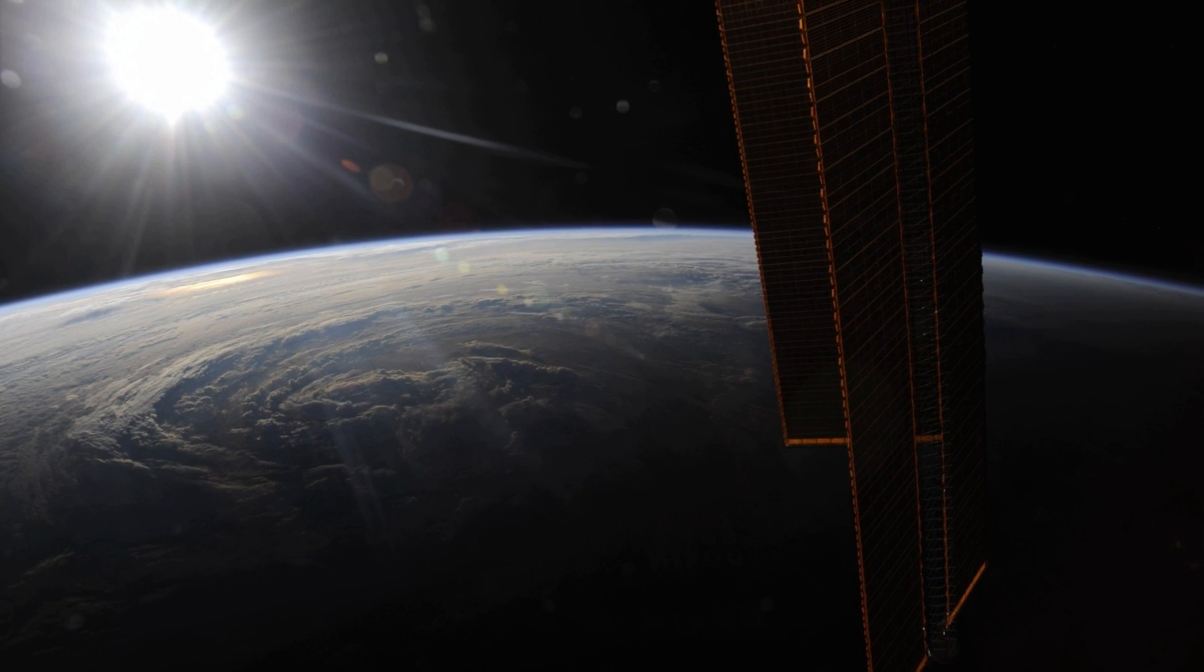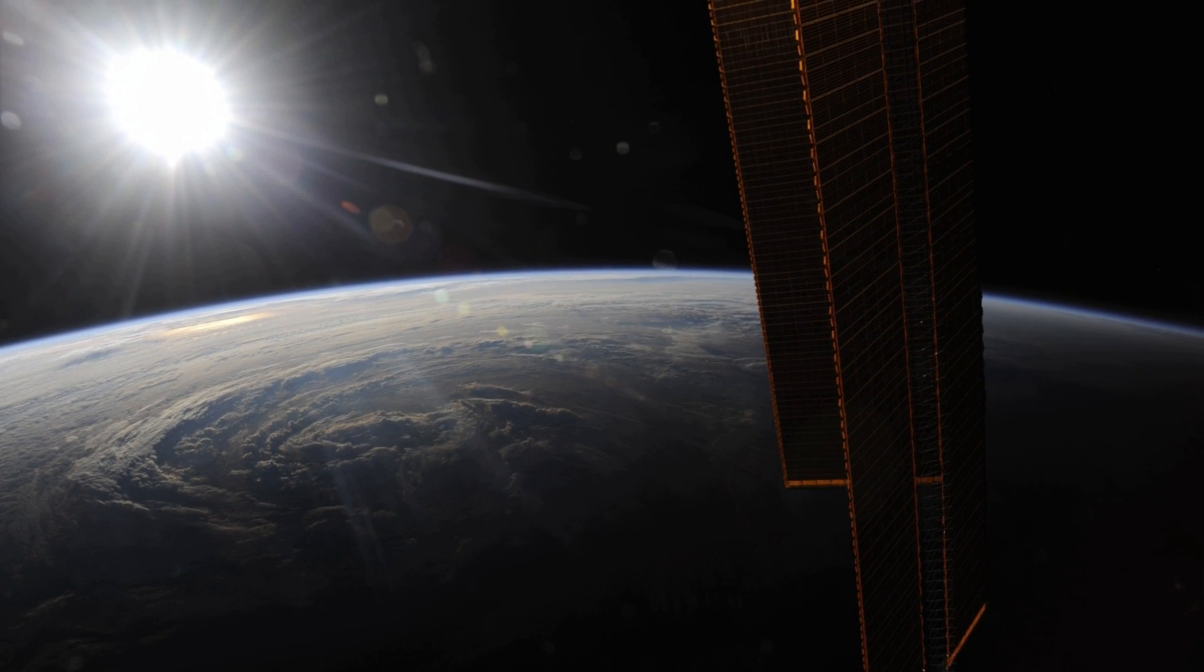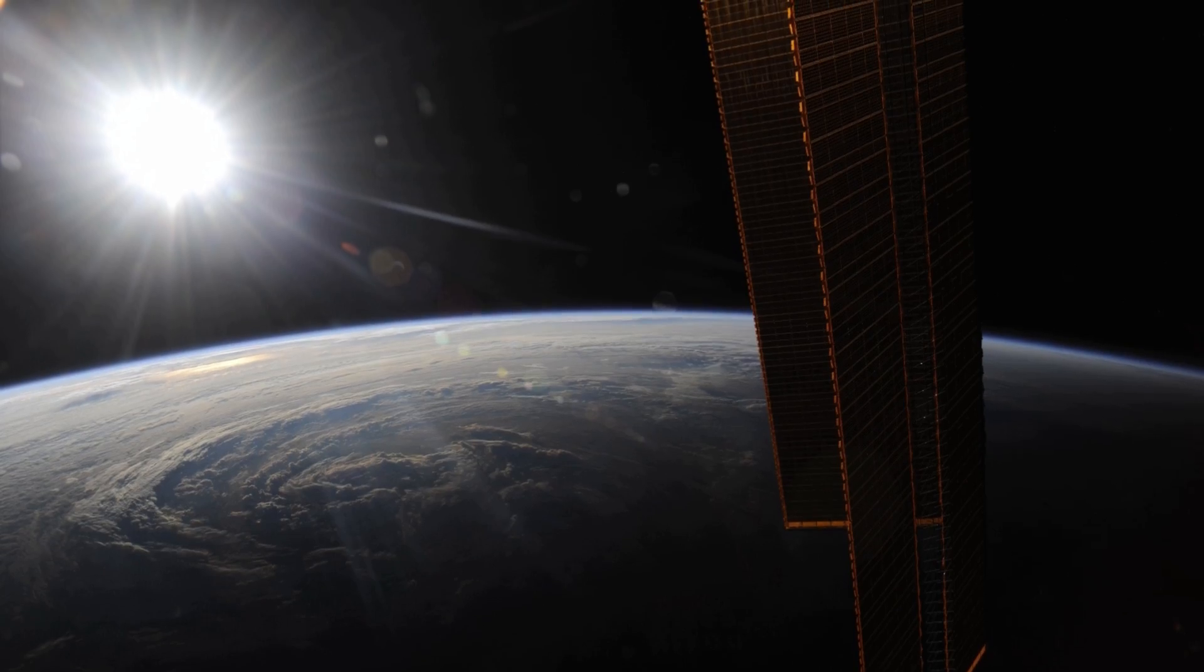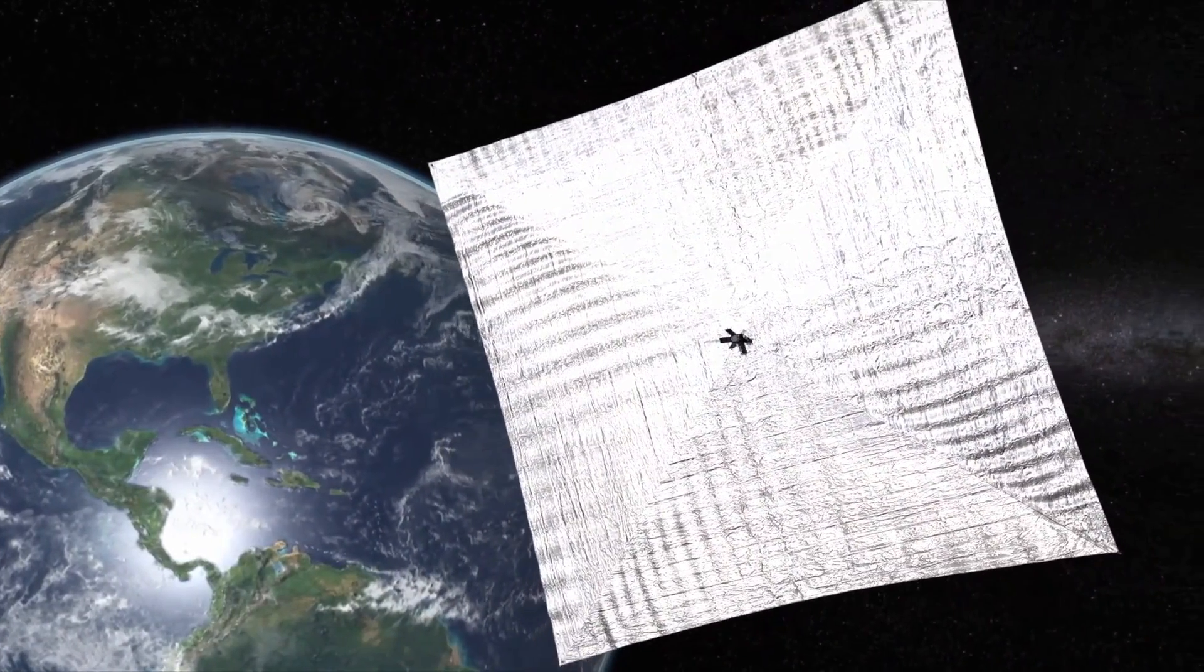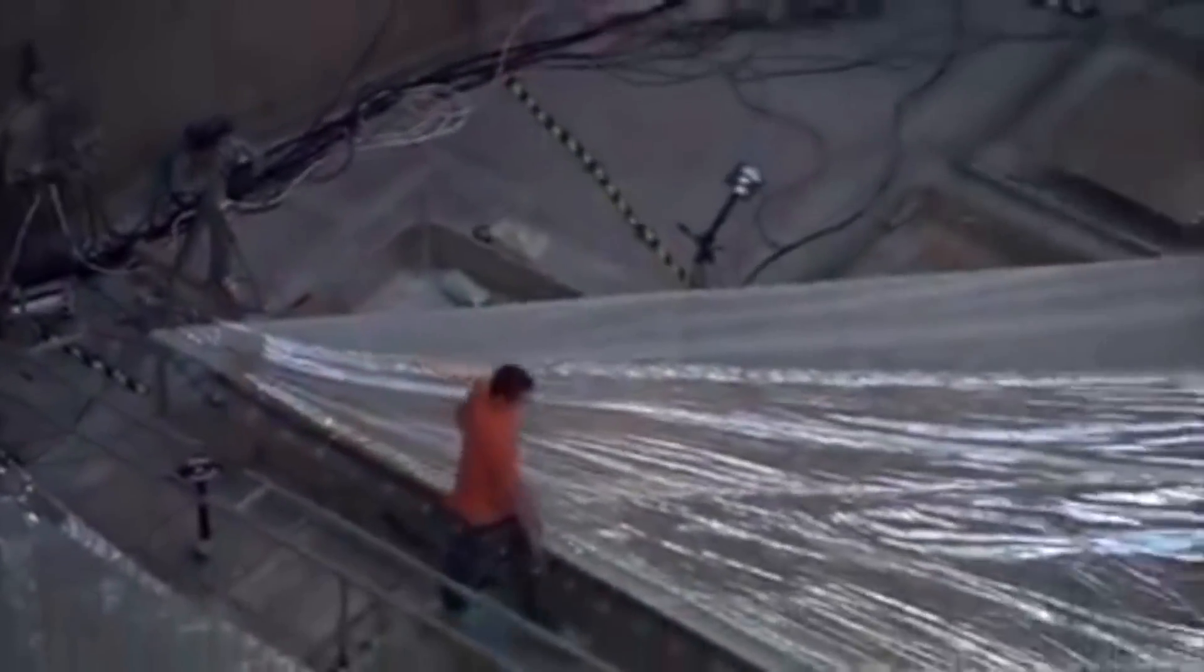In order for sunlight to provide sufficient pressure to propel a spacecraft forward, a solar sail must capture as much sunlight as possible. This means that the surface of the sail must be big, very big.